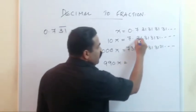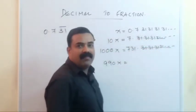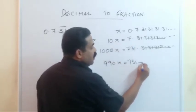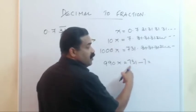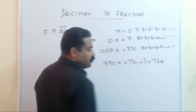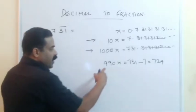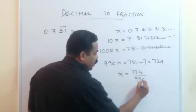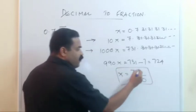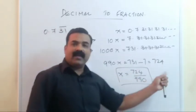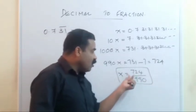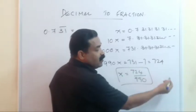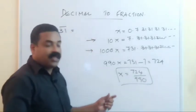Now subtract: 1000x minus 10x gives 990x. On the right side, after the decimal everything cancels. We get 731 minus 7 = 724. So 990x = 724, meaning x = 724/990. This is the answer. You can simplify by dividing by a common factor of 2 if needed, and check which option is given.